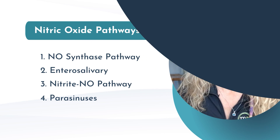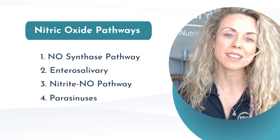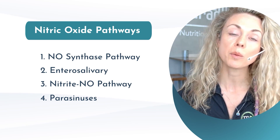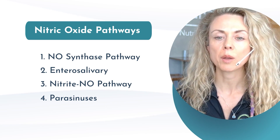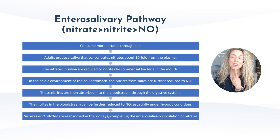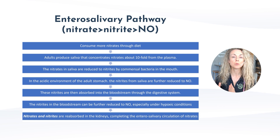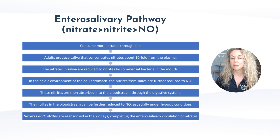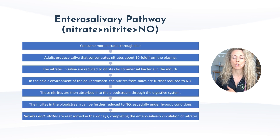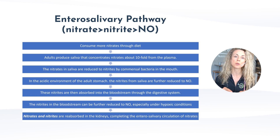Let's do a quick review of the pathways. The first is the NOS pathway — the nitric oxide synthase pathway — which unfortunately is greatly affected as we age. By age 40, it can decrease nitric oxide production by up to 50%. That makes us rely on the enterosalivary pathway: nitrate to nitrite to nitric oxide. We consume nitrates through the diet, which are reduced to nitrites by commensal bacteria on the posterior tongue, then further reduced to nitric oxide in the acidic environment of the stomach. Nitrites are then absorbed into the bloodstream via the small intestine, further reduced to nitric oxide — especially under hypoxic conditions — and ultimately nitrates and nitrites are reabsorbed in the kidneys, completing the enterosalivary circulation.